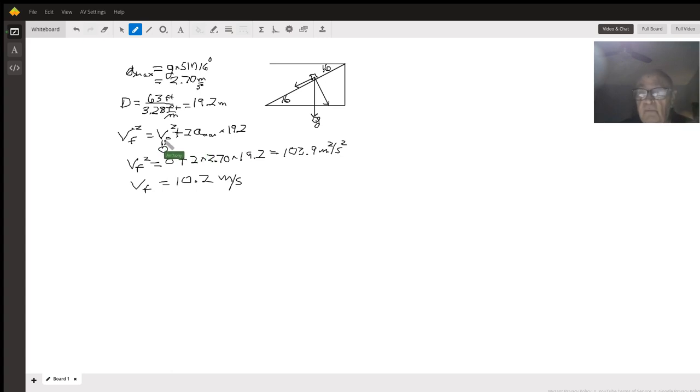The initial velocity is zero because we'll assume it starts out standing still. So we put our numbers in here: v_f squared is equal to zero plus two times 2.70 times 19.2.